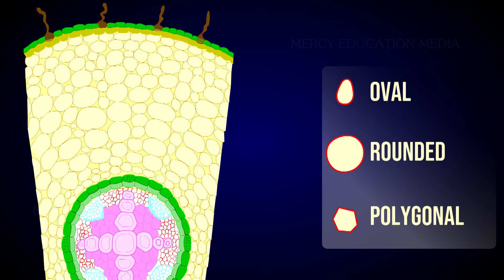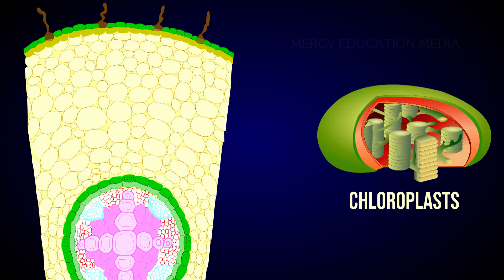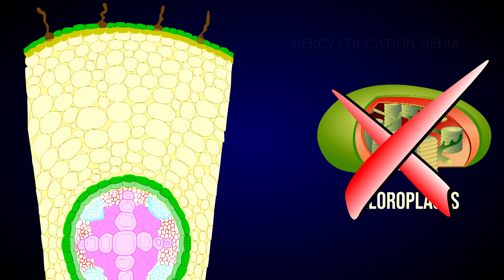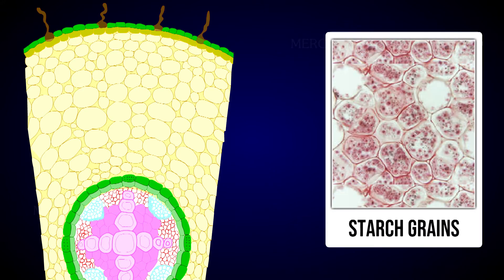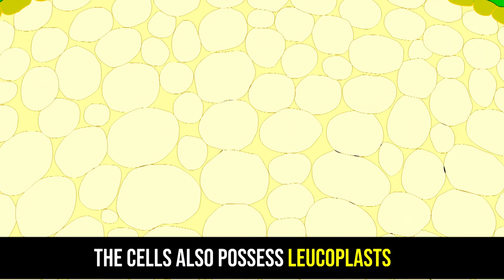Though chloroplasts are absent in cortical cells, starch grains are stored in them. The cells also possess leucoplasts.